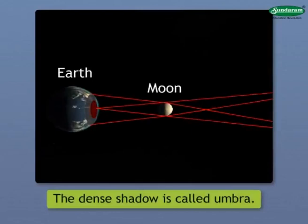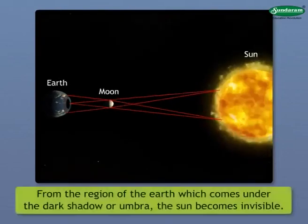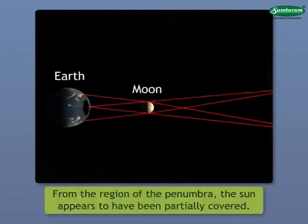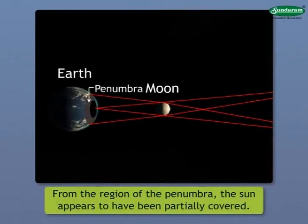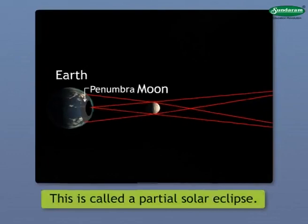The dense shadow is called Umbra and the sparse shadow is called Penumbra. From the region of the Earth which comes under the dark shadow or Umbra, the Sun becomes invisible. Such a situation is called a total solar eclipse. From the region of the Penumbra, the Sun appears to have been partially covered. This is called a partial solar eclipse.